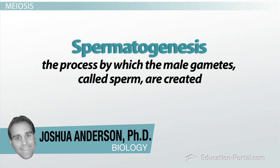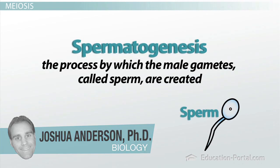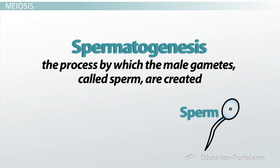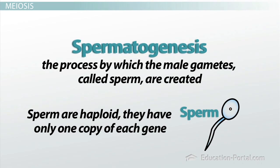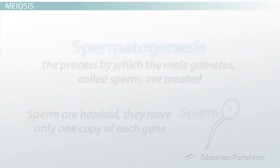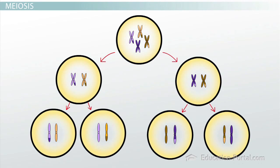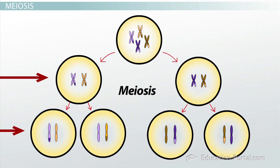Spermatogenesis is the process by which the male gametes, called sperm, are created. In order to create sperm that can combine with a female gamete, each sperm must be haploid and contain only one copy of each chromosome. In order to create haploid gametes, a cell must go through the process of meiosis, which involves replicating its genome and then dividing not once, but twice, to create four haploid gametes from a single diploid cell.